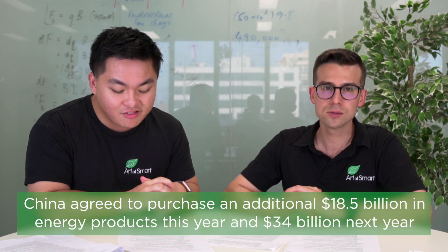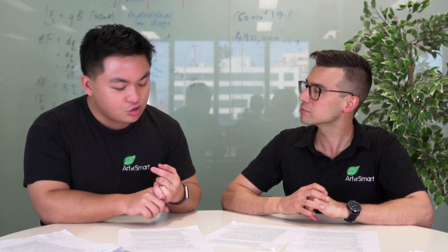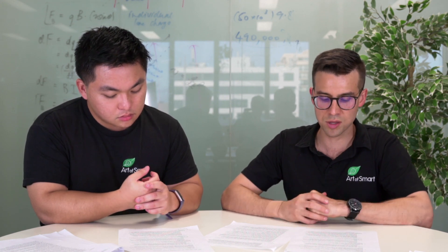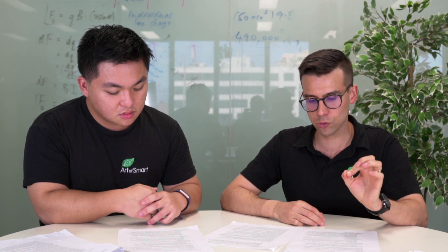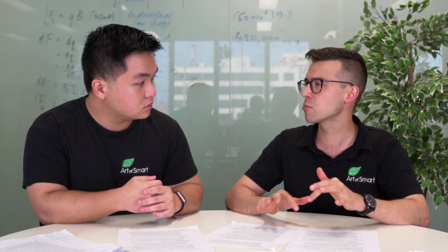Under this deal, China has agreed to purchase an extra 18.5 billion dollars in energy products in the first year and 34 billion extra dollars the next year, including things like power, cars, planes, and factories — a huge increase from 2017 levels, in some cases a 275 percent increase. The question to unpack is: to what extent is this setting China up for failure, or is the US setting China up to fail, placing China under more pressure to make further concessions in Phase Two?